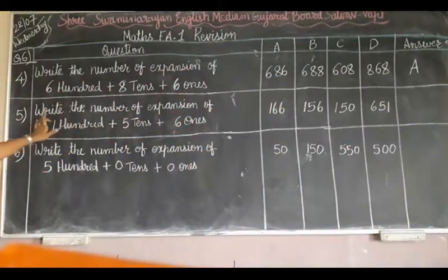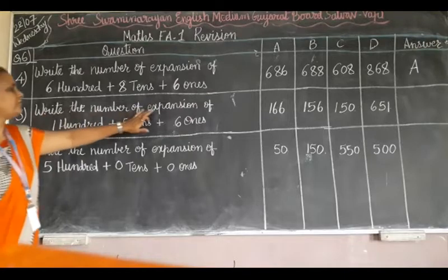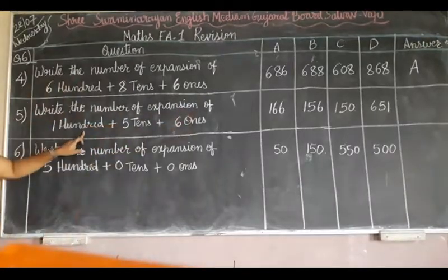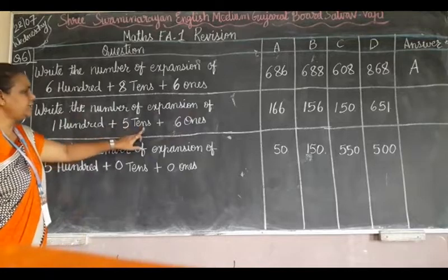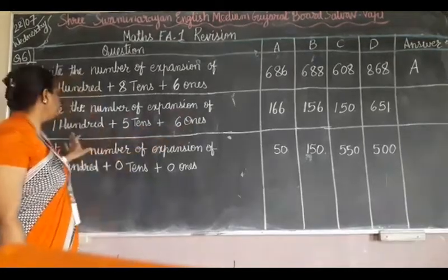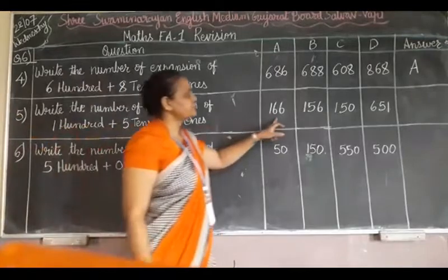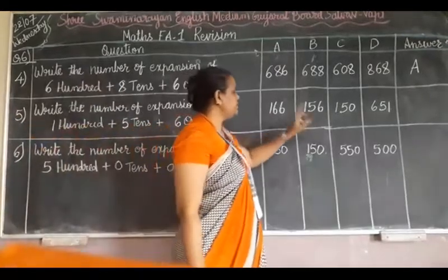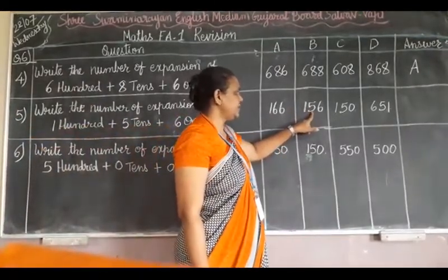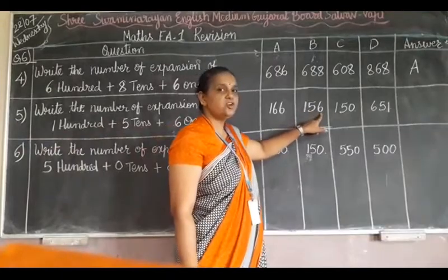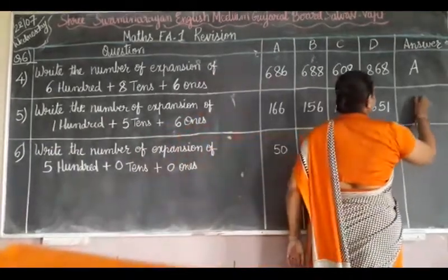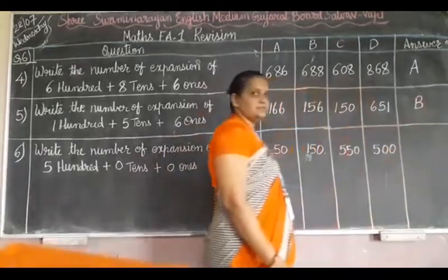Now write the number expansion of 100 plus 5 tenths plus 6 ones. Which option is right? Yes, B is the answer. 100 — 5 is in the tenths place and 6 is in the ones place. So B answer is the right answer.